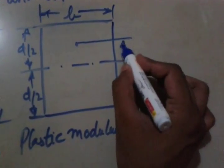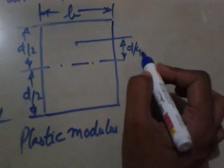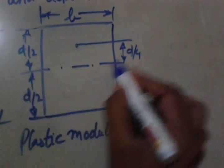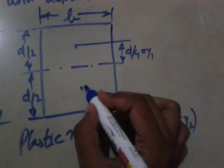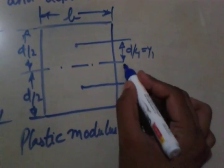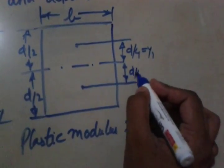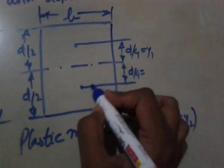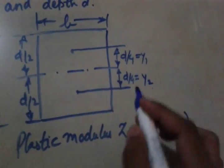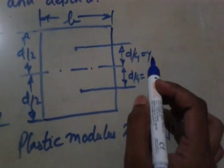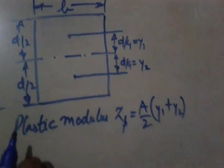So this will be D by 4, half of D by 2. So this is y1 and this is D by 4. So the centroid for this particular section, so this is y1 and this is y2.